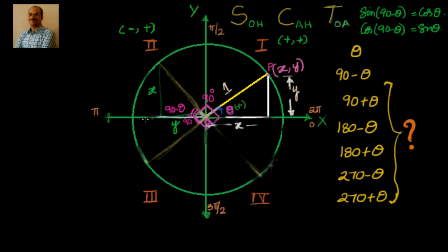If you draw this right angle triangle and compare it with the original, you see that both of them are congruent because this side is equal to x, this side is equal to x, this is equal to y and y, and these angles are vertically opposite angles. So in this case, y remains y and x remains x — that means sine remains as sine.